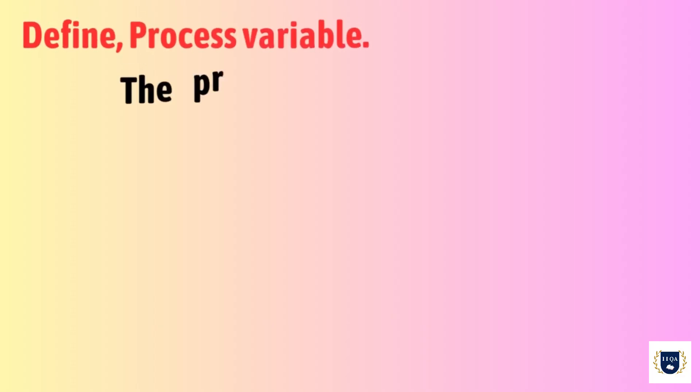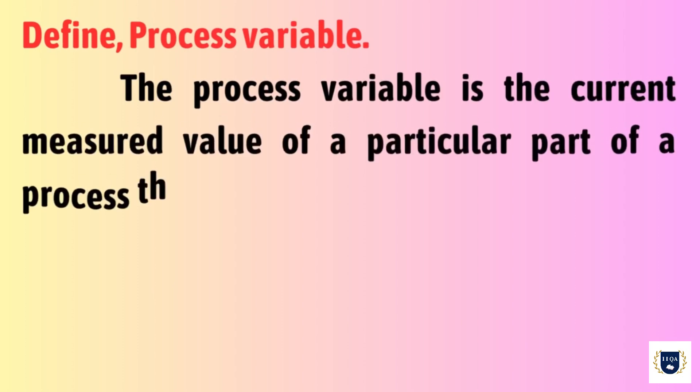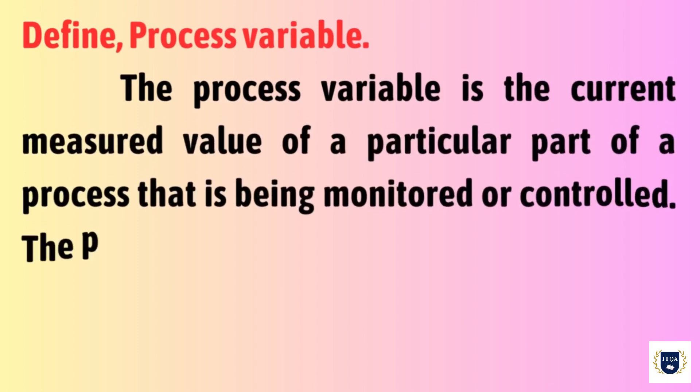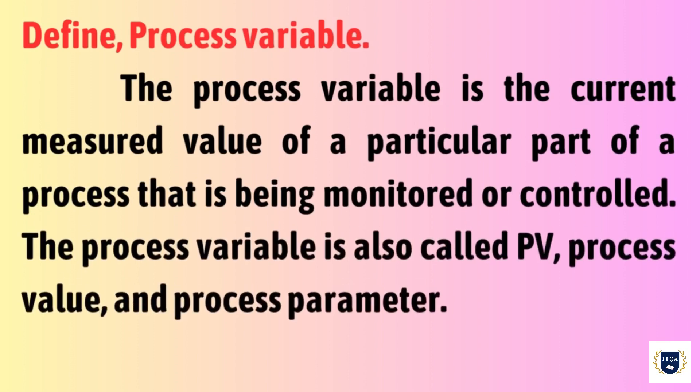Define Process Variable. The process variable is the current measured value of a particular part of a process that is being monitored or controlled. The process variable is also called PV, process value, and process parameter.